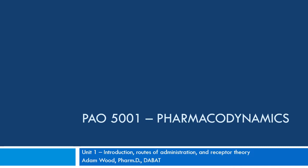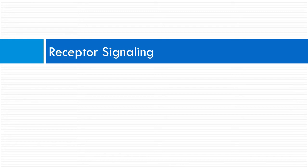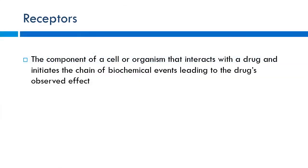Continuing about receptor signaling — every drug has to interact with some sort of receptor. Receptors are that component of a cell or organism that interacts with drugs and initiates a chain of events leading to a change in function. For instance, binding to one particular receptor can cause a downstream effect where blood pressure or blood sugar goes down — whatever physiological effect we're looking at is usually mediated through some sort of receptor.